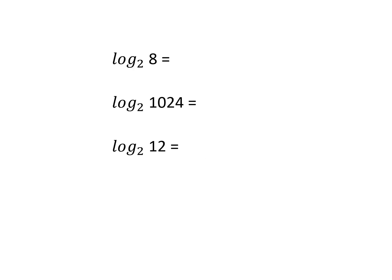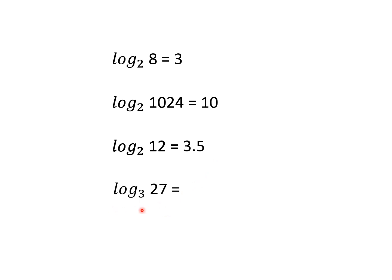More examples: log base 2 of 8 — how many times do we multiply 2 to get 8? 2×2×2 = 8, so the answer is 3. Log base 2 of 1024: since 2 to the power 10 is 1024, the answer is 10. For 12, since it lies between 2³=8 and 2⁴=16, the answer is approximately 3.5. For log base 3 of 27: since 3³=27, the answer is 3.